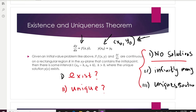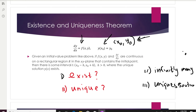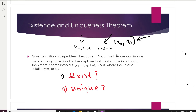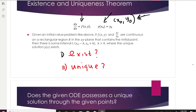So let's read the theorem. Given an initial value problem — meaning a differential equation paired with an initial condition — if f and the partial derivative of f with respect to y are continuous on a rectangular region R in the xy-plane containing the initial point, then there is some interval where a unique solution y exists. That's a lot to take in, so let's break it down.